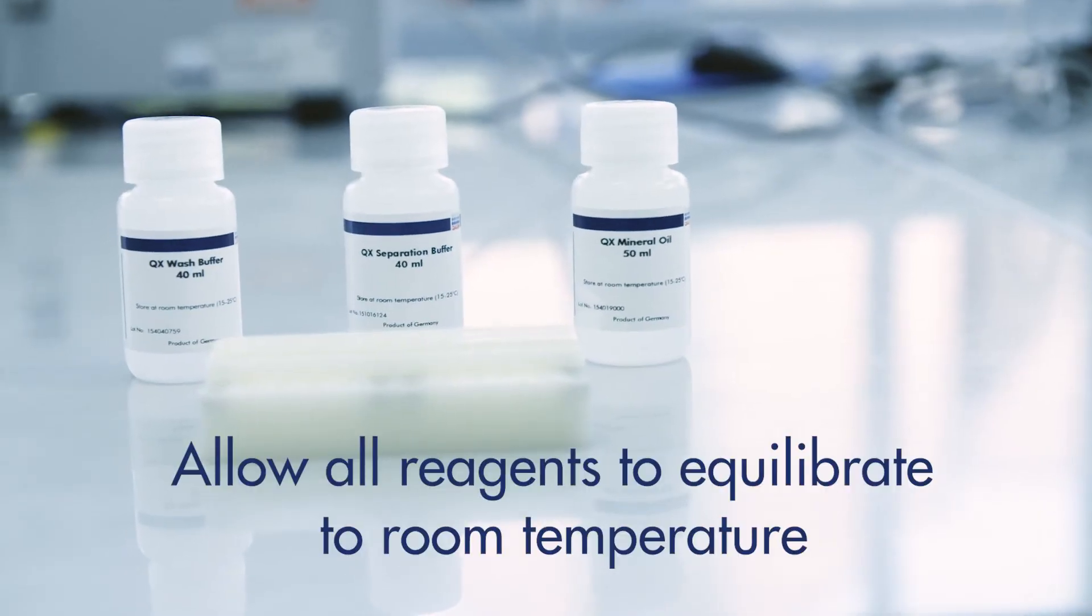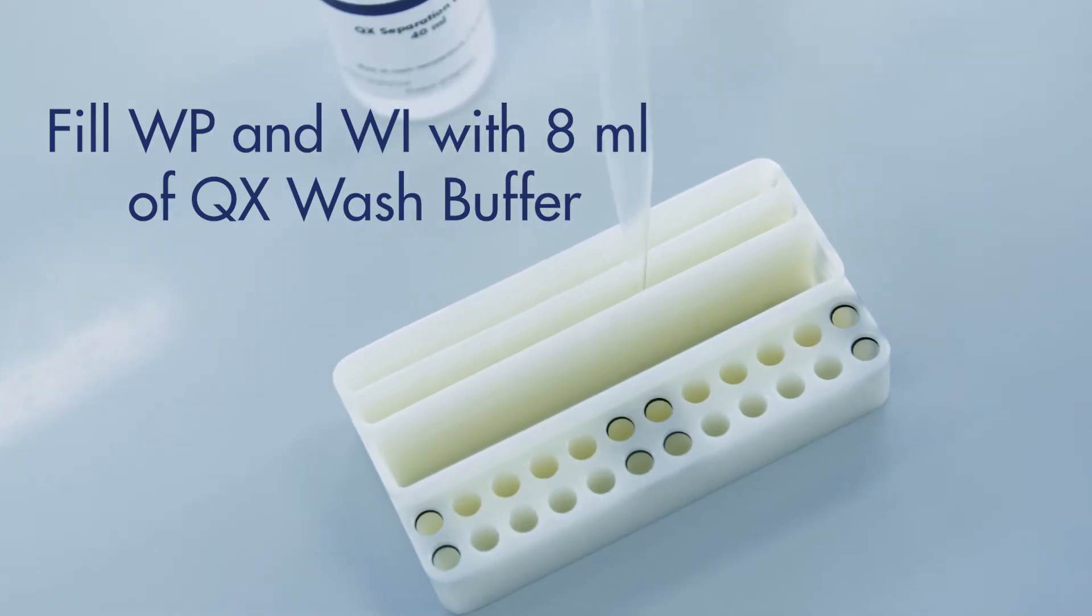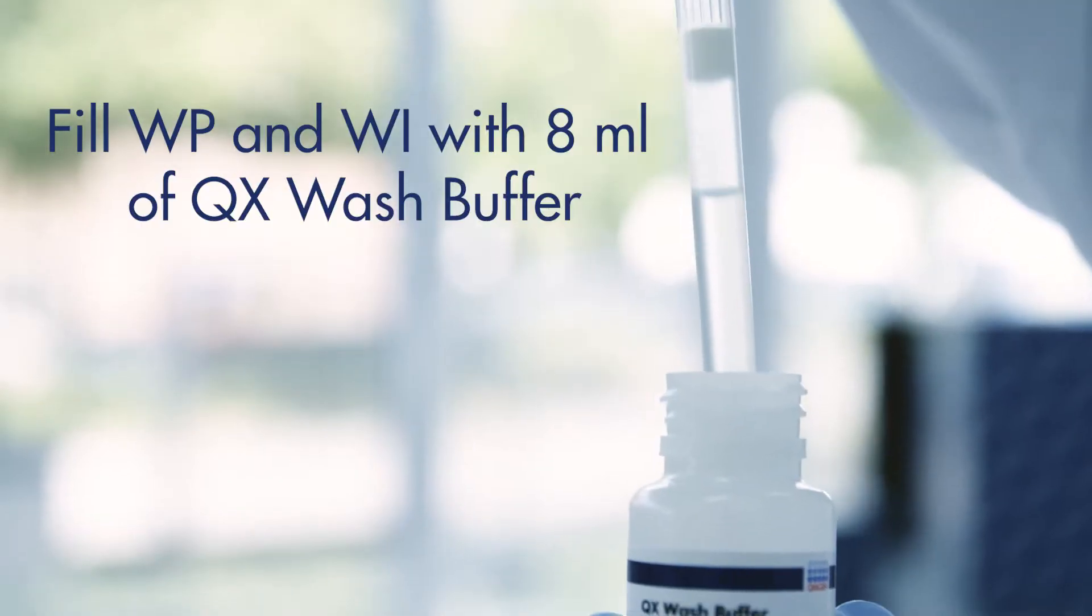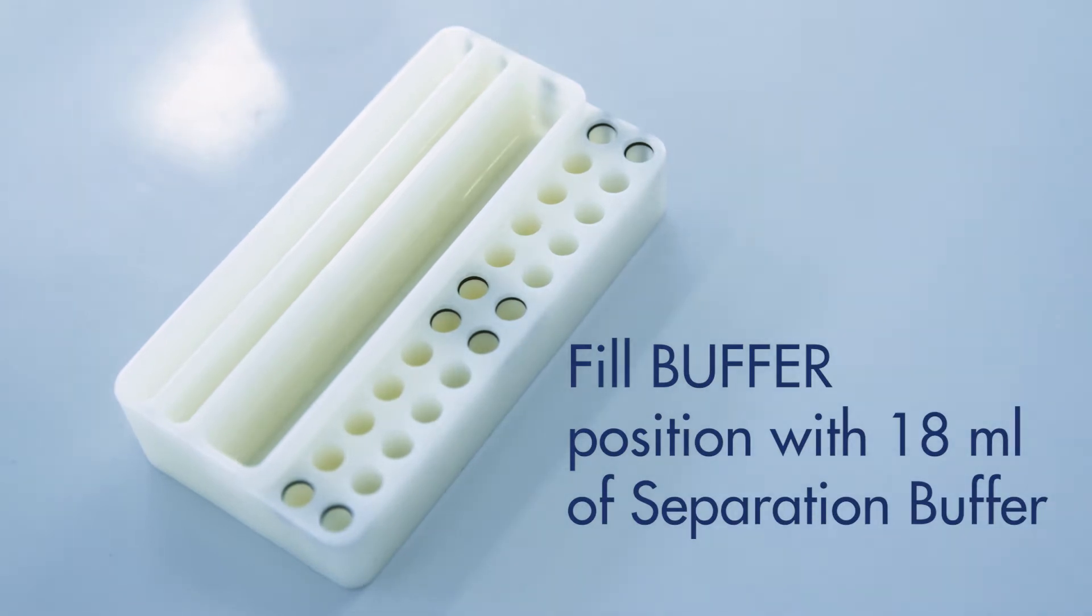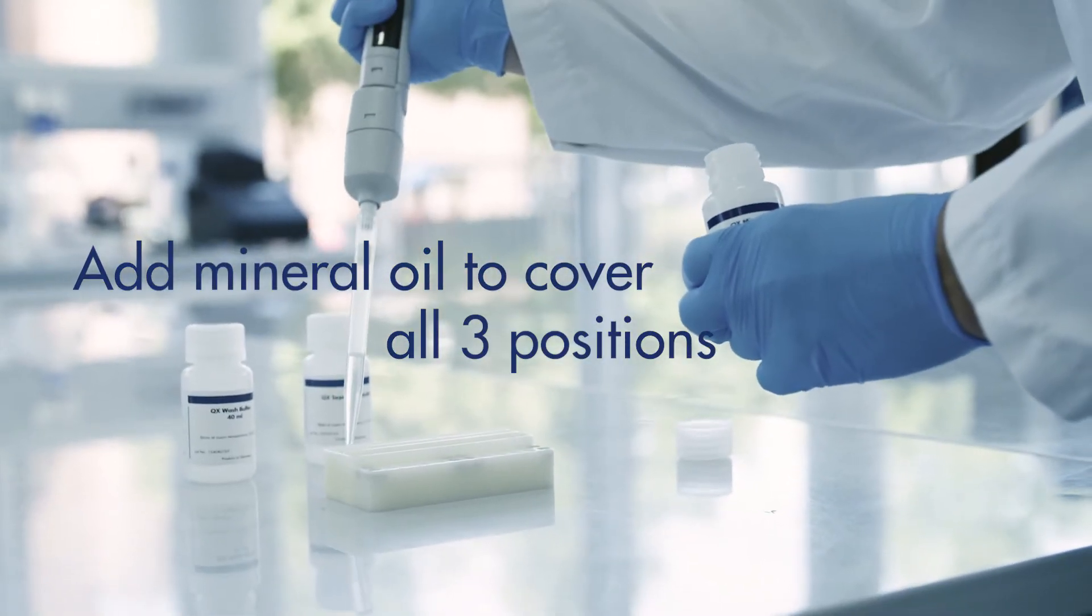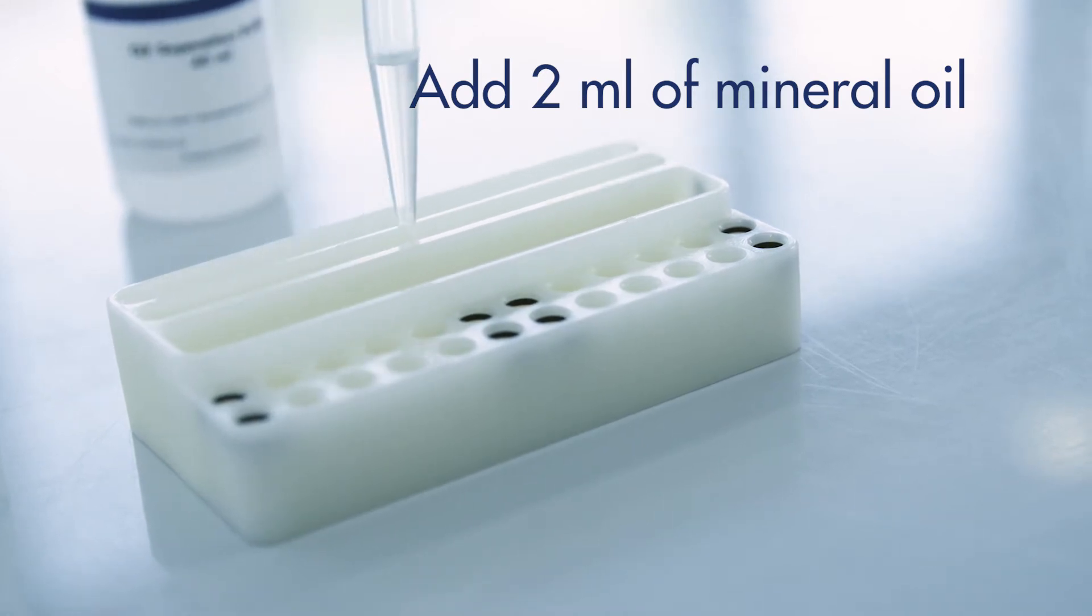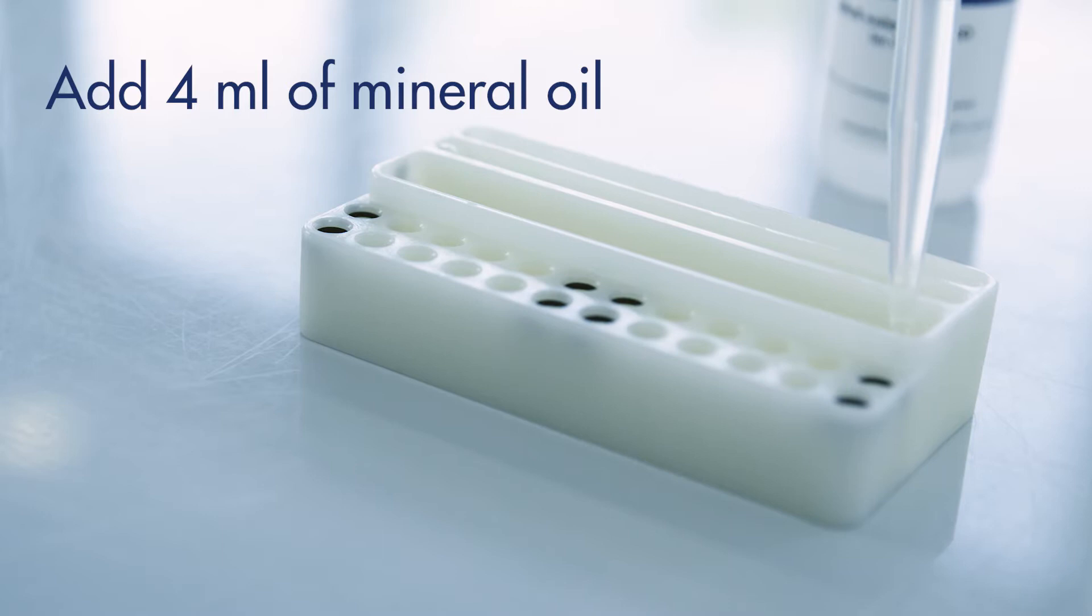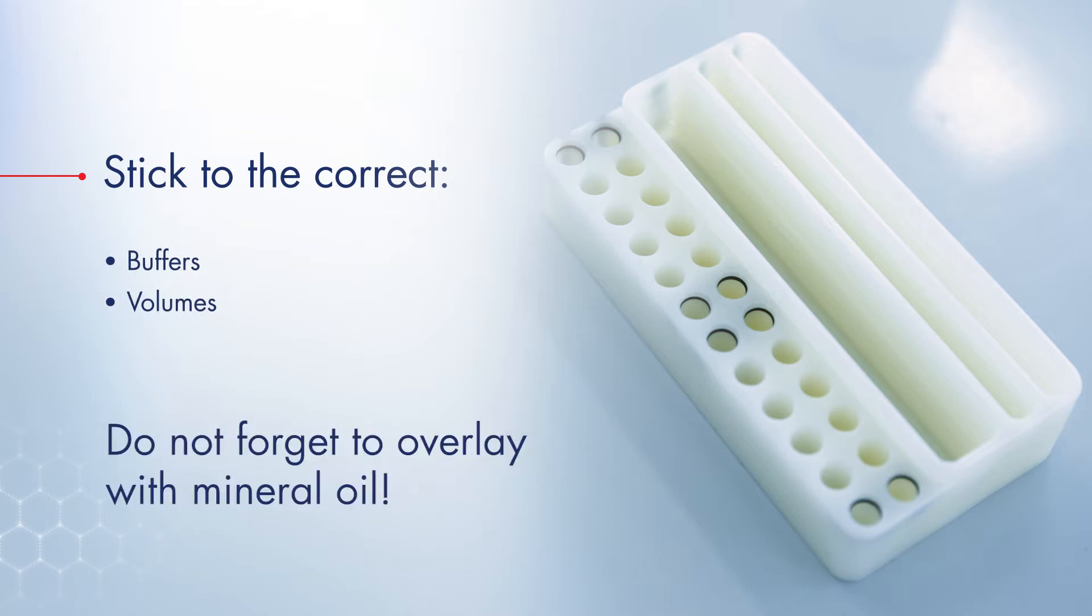Allow all reagents to equilibrate to room temperature. Fill the WP and WI positions of the buffer tray with 8 ml of QX wash buffer. Fill the buffer position with 18 ml of the appropriate separation buffer. Carefully add mineral oil to cover all three positions to prevent any evaporation. Add 2 ml of mineral oil to the positions WP and WI. Add 4 ml of mineral oil to the buffer position. It is crucial to stick to the correct buffers and volumes. Do not forget to overlay with mineral oil.